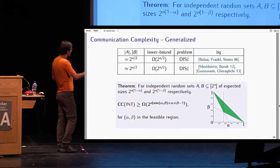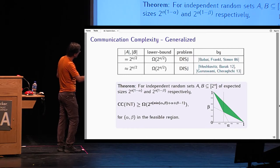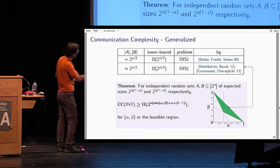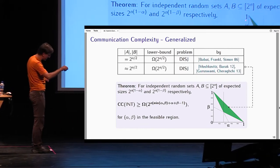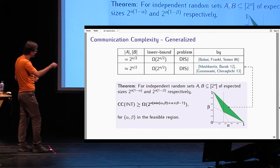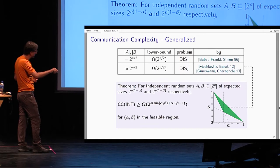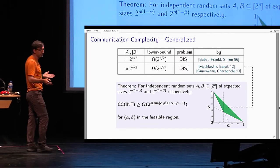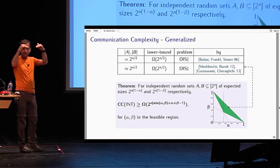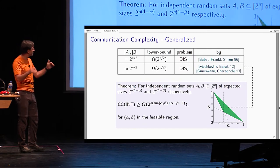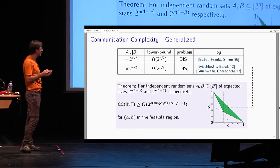This is for intersection here. The half half point is this result. What we show in the paper is that we extend the hardness of set disjointness to this line and set intersection to all this region here. It remains an open problem whether this feasible region extends all the way to the origin.